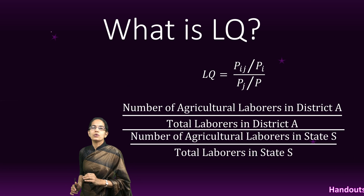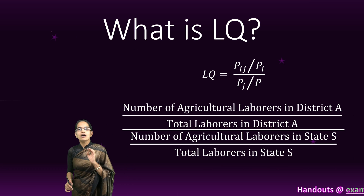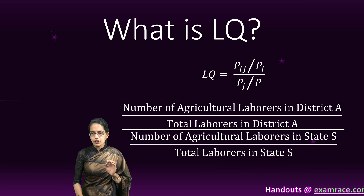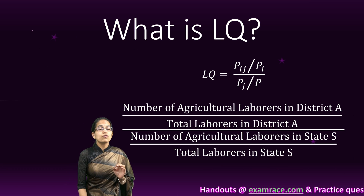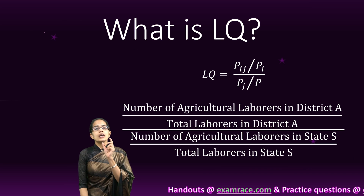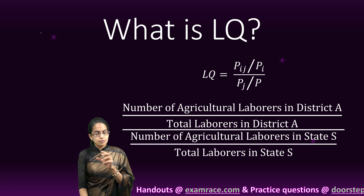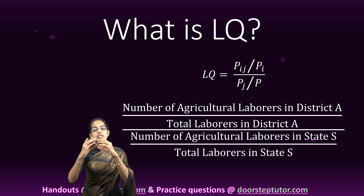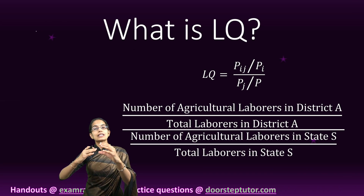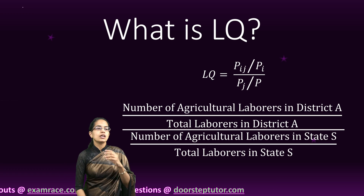Location quotient is a very simple concept where we are trying to find out any aspect in a smaller unit in contrast to the same aspect in a bigger unit.